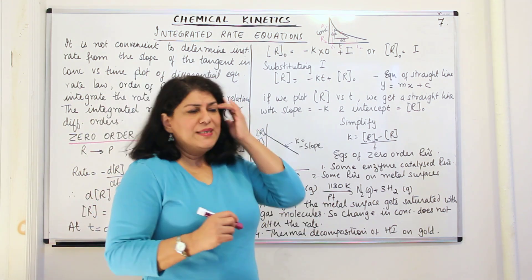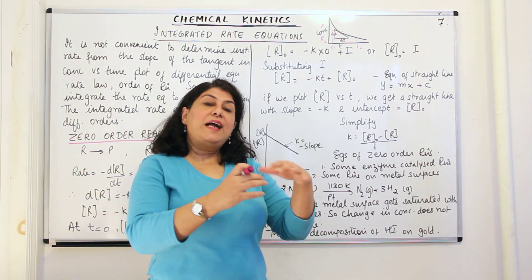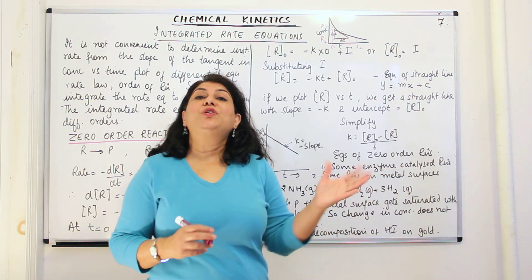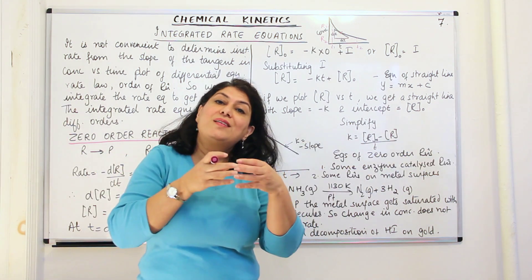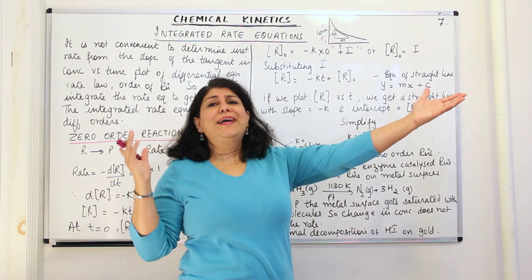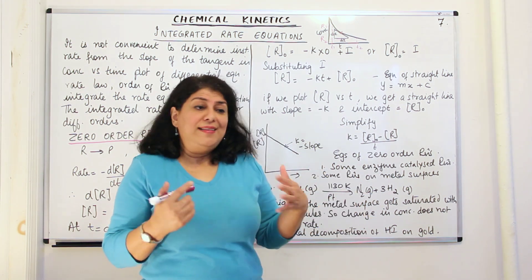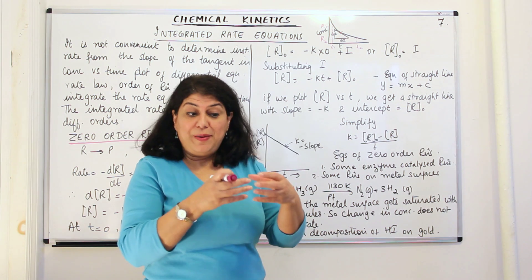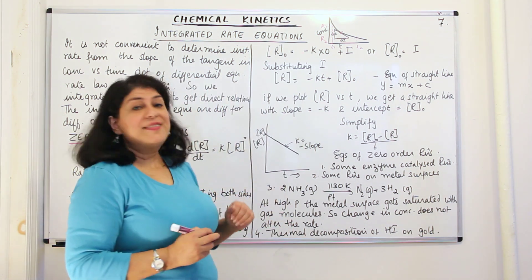Another example is reactions that take place on metal surfaces. When a reaction occurs on a metal surface, the surface area of the metal becomes the limiting factor — just as the enzyme was the limiting factor. However much reactant you have, the reaction can only take place on the surface of the metal. The extra reactant does not affect the speed of the reaction, so the rate does not depend on the concentration of the reactant — making it a zero order reaction.